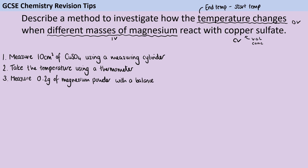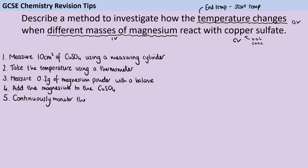Then I'm going to measure out 0.2 grams of magnesium powder using a balance. Again, it's not important that it's 0.2 grams — it's just faster to write down numbers rather than talk about 'do it again with different masses of magnesium.' Then we're going to add that magnesium to the copper sulphate, because if we haven't added them together, no displacement reaction is going to take place. We're going to continuously monitor the temperature and record what the highest value is. If you haven't identified that this is an exothermic reaction, just saying 'until the temperature stops changing' is absolutely fine.